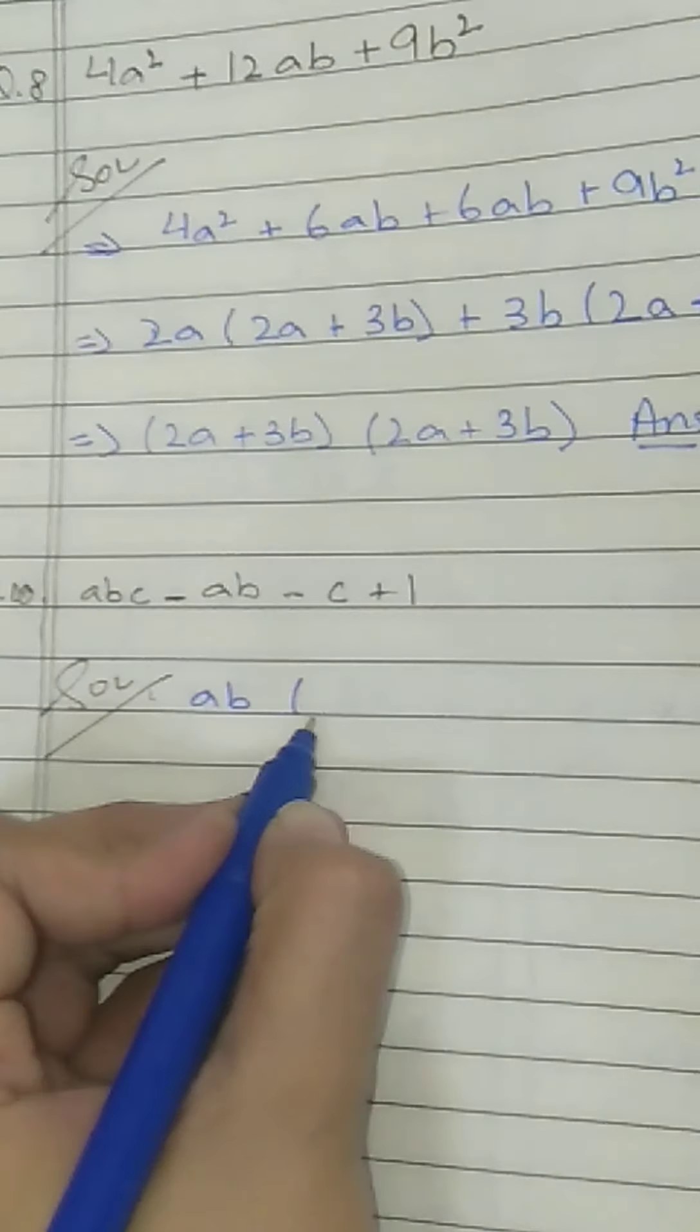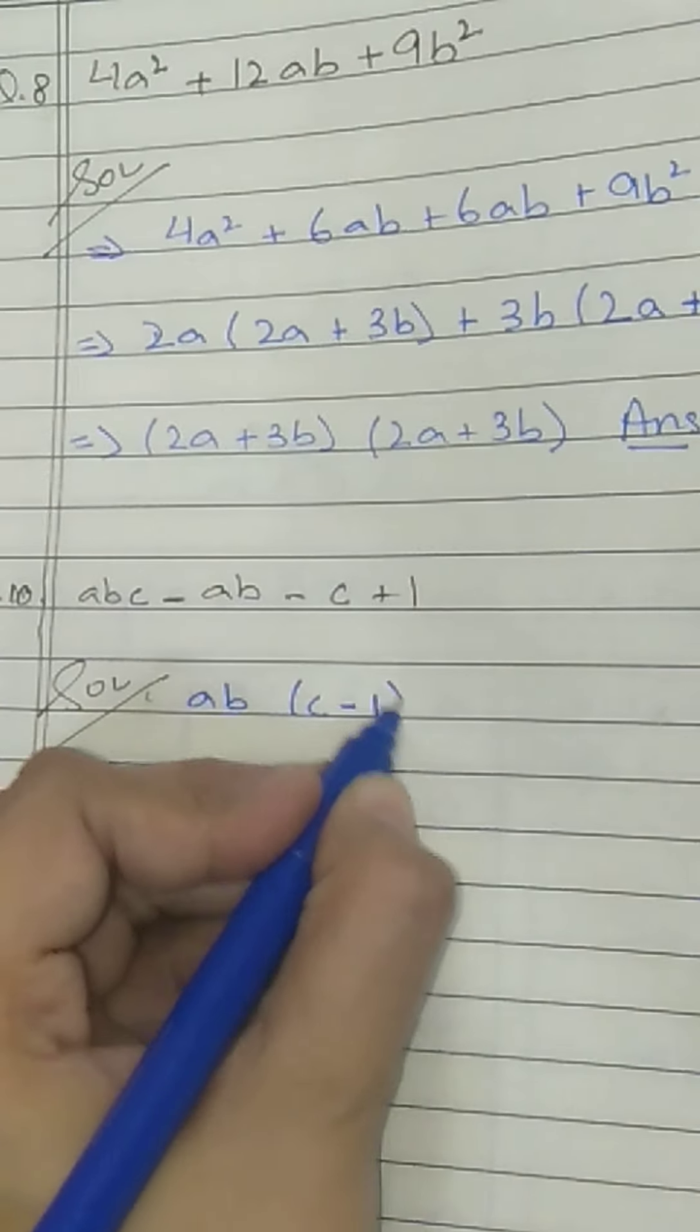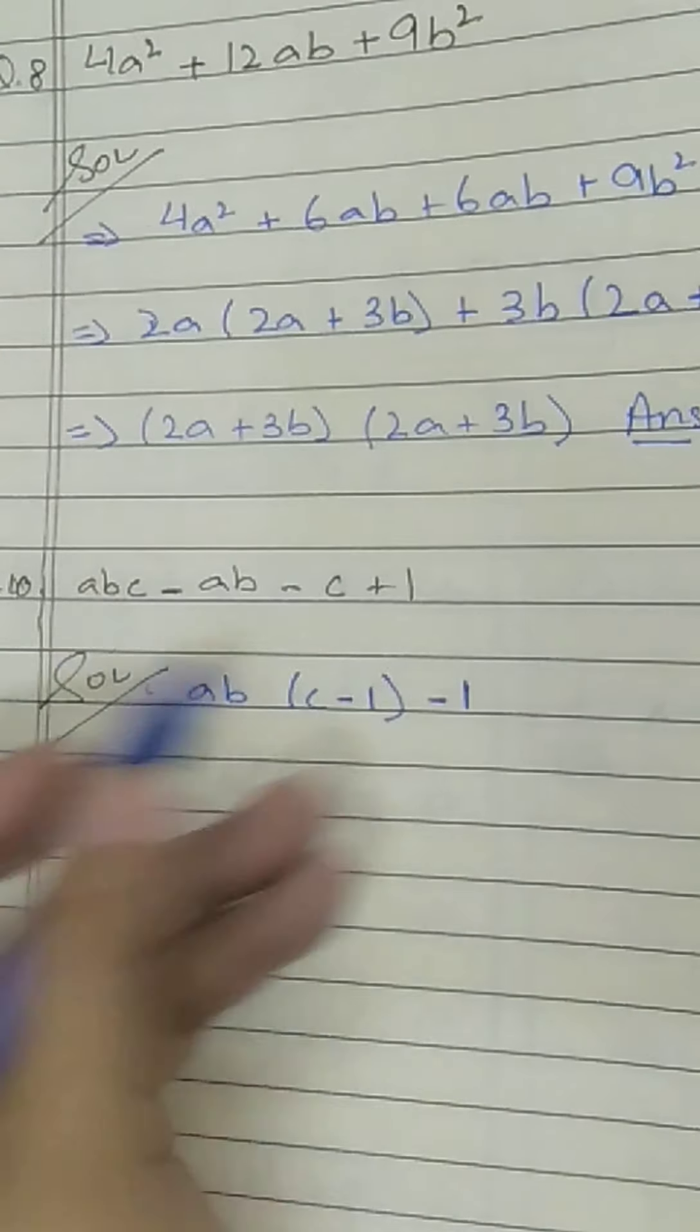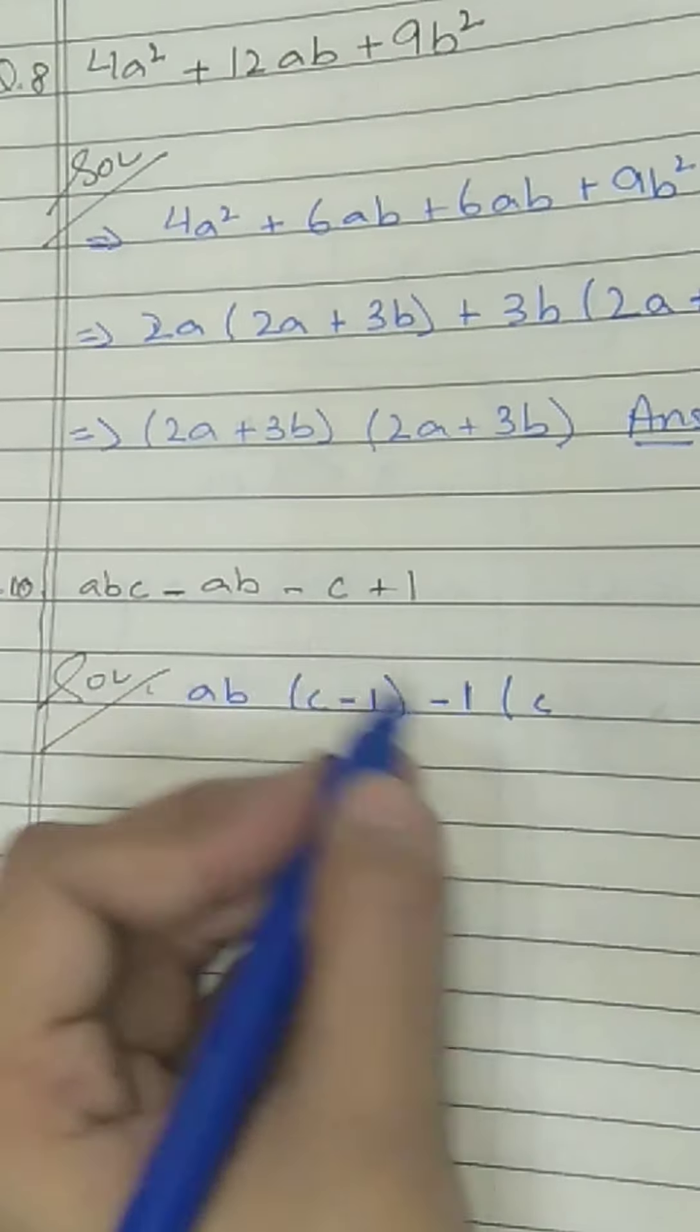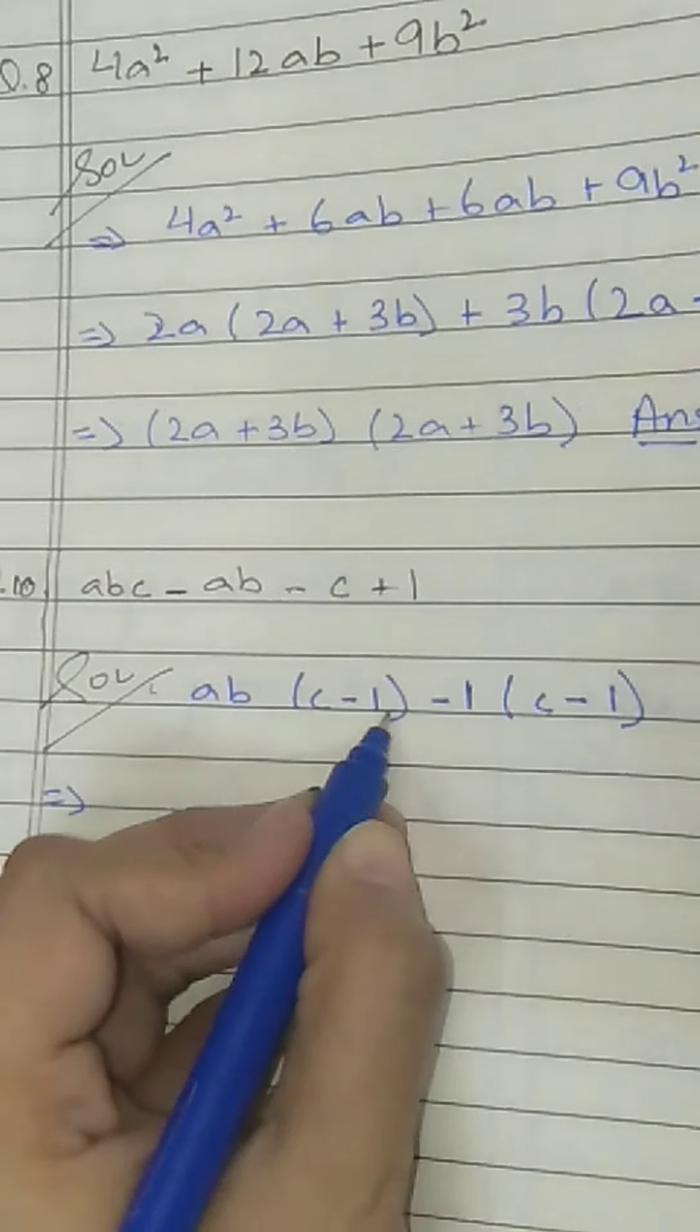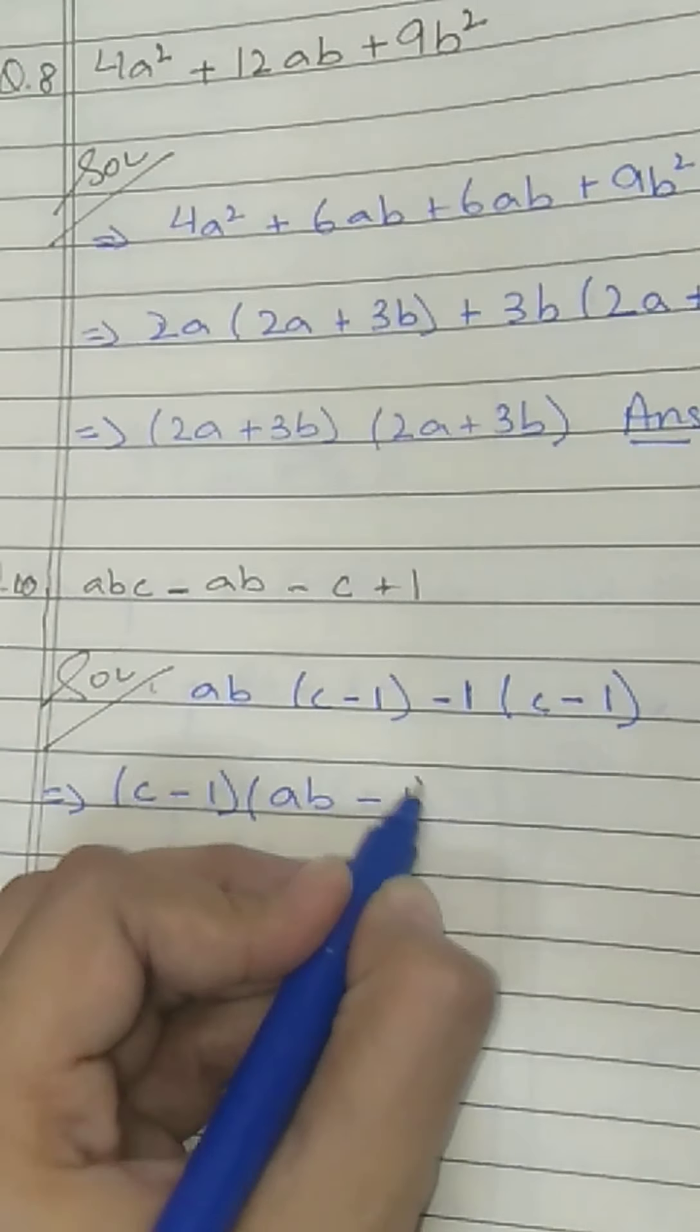AB is common, so what we have? C minus 1. And the next bracket, nothing is common, so take 1. When nothing is common, we say 1 is a common thing everyone has. So C as it is comes, minus sign times 1, minus plus minus, and 1 again remaining inside. So C minus 1, C minus 1. A common bracket came and the next bracket is AB minus 1.